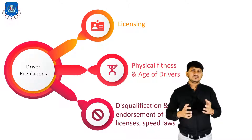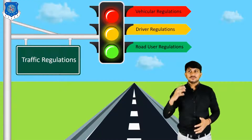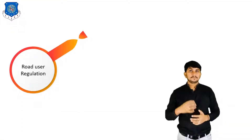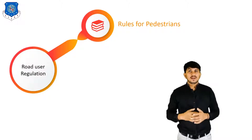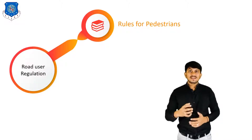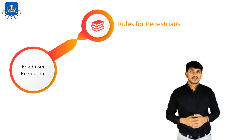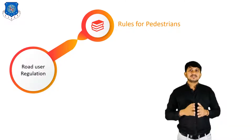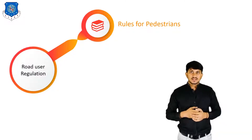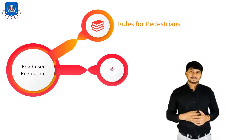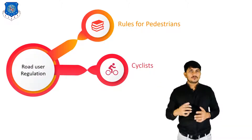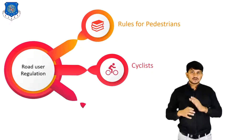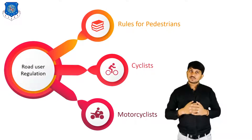Next is Road User Regulations. Here we have to also think for pedestrians. At crossroads where there are pedestrian crossings, always walk on the footpath. Where there is no footpath, walk on the right side of the margin of the road so that you can see the traffic coming in the opposite direction. Next is about cyclists — we should provide separate routes for cyclists to ensure their safety and comfort on the road. Last but not the least, we should provide facilities to motorcyclists also.